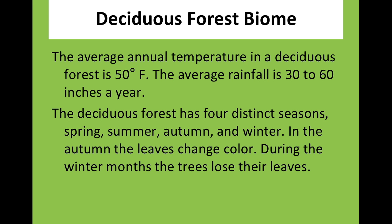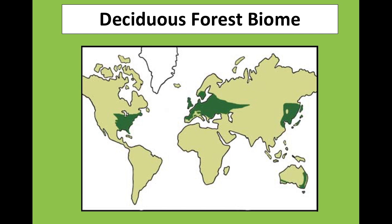Deciduous trees occupy a specific niche. They occur readily in forests with an average temperature near 50 degrees Fahrenheit and 30 to 60 inches of precipitation a year. These areas also have four distinct seasons: spring, summer, autumn, and winter. It is during the autumn season when deciduous trees lose their leaves. This map shows where deciduous forests can be located worldwide. As we can see, deciduous forests can be found across the eastern half of the United States.